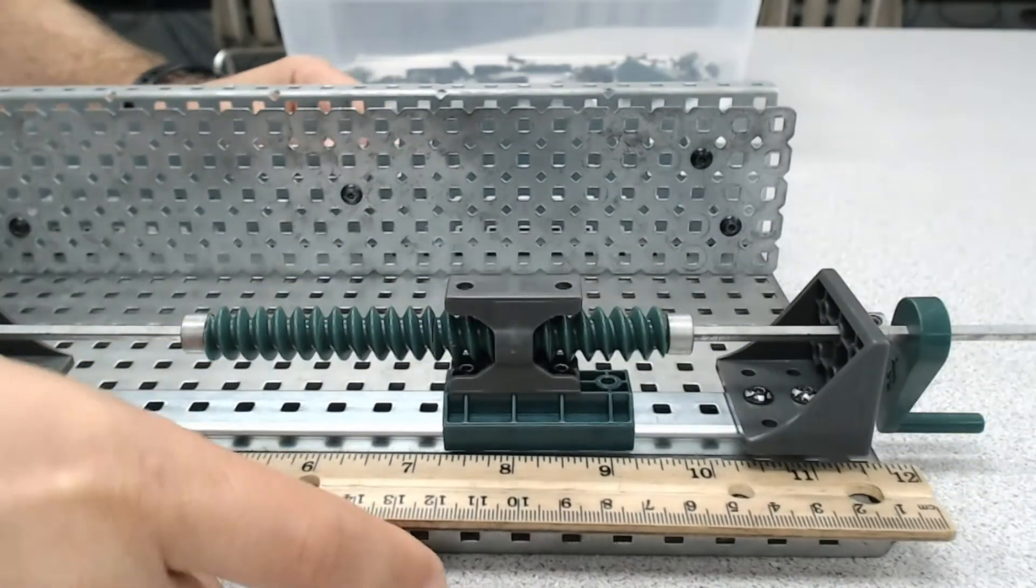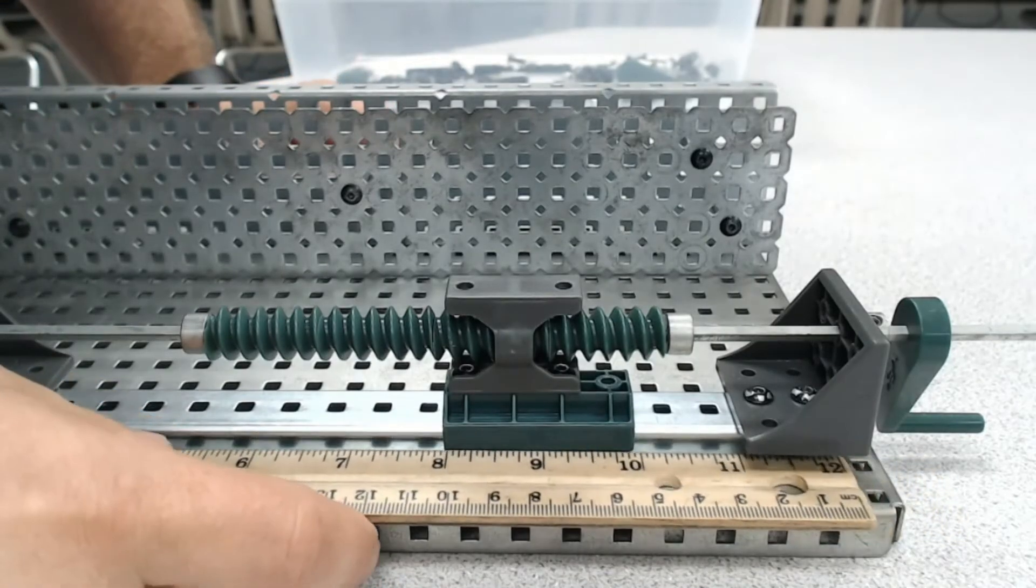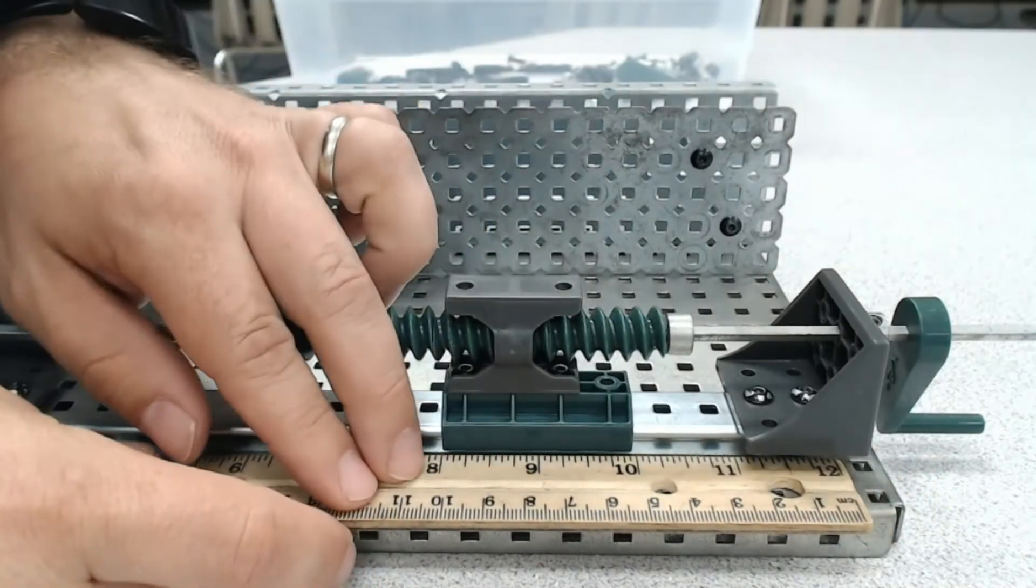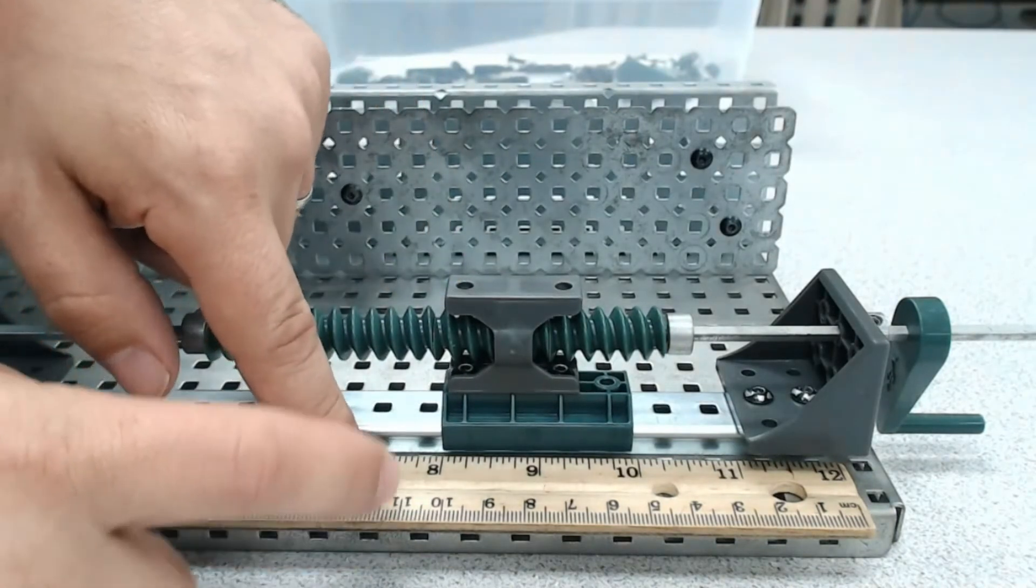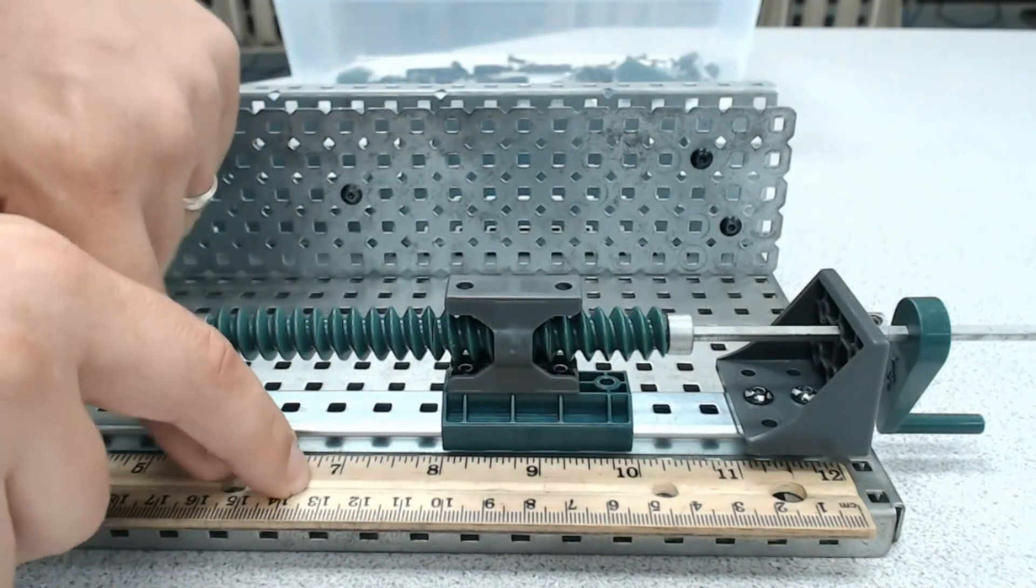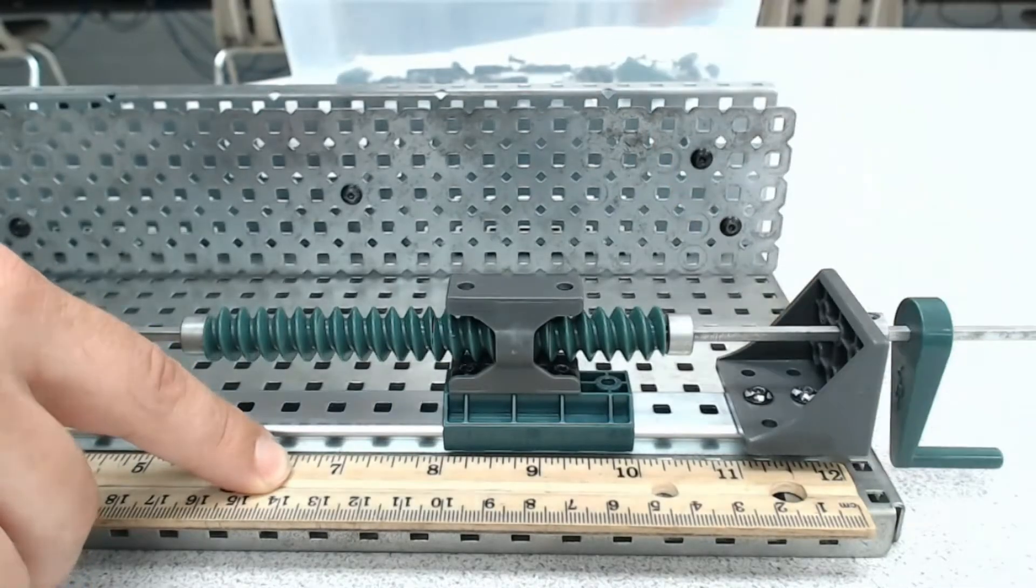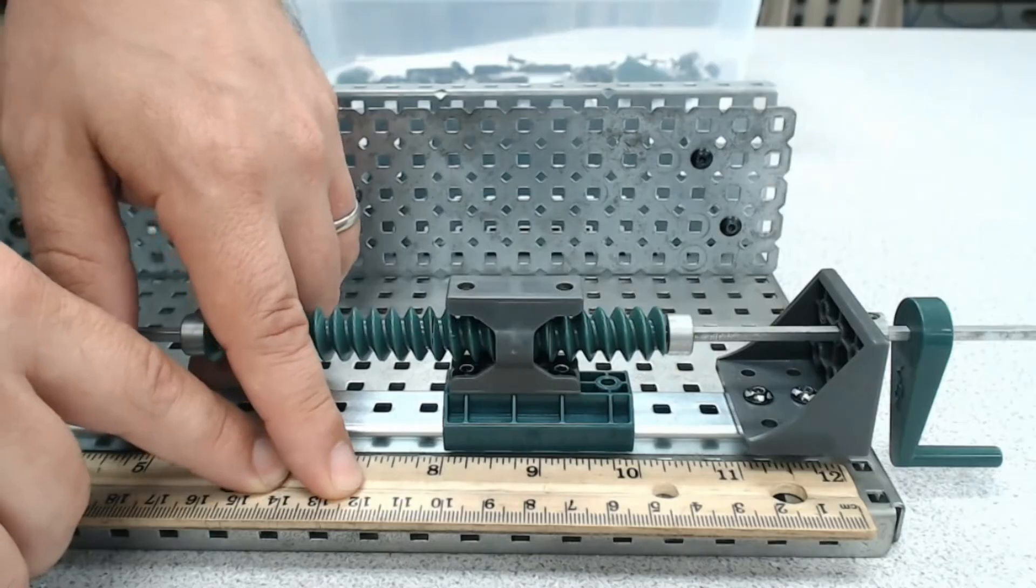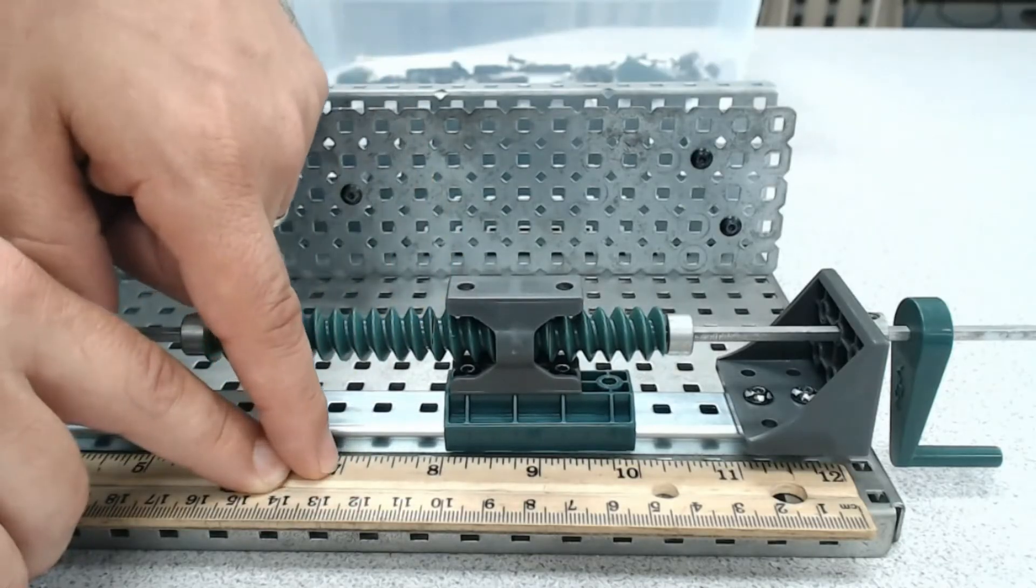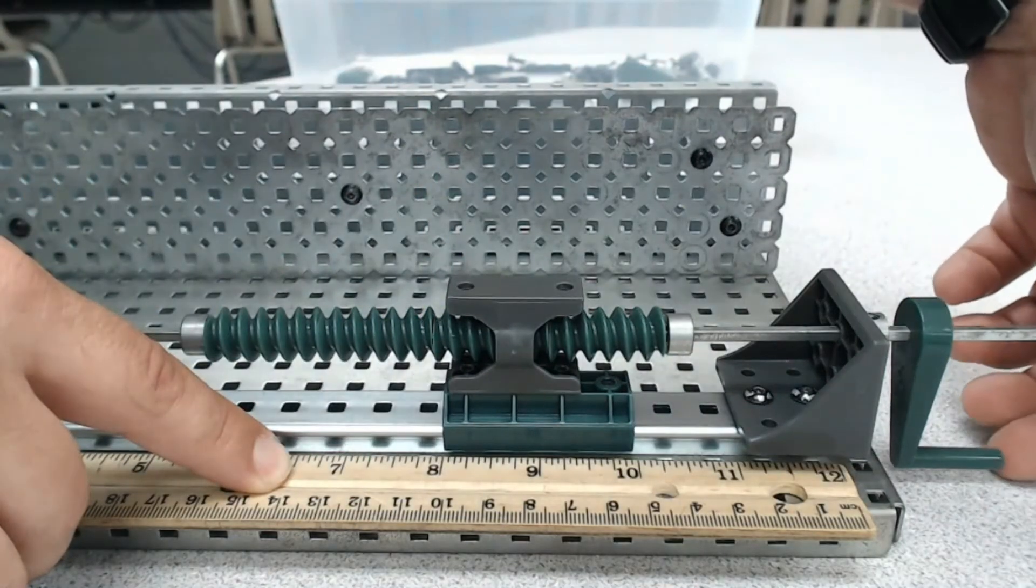And I'm going to line the ruler up here so that the front of the whole output assembly is lined up on eight. And now what I'm going to do is, let me get the handle just where I want it. We want to see how many revolutions does it take to get this whole assembly lined up with seven. So I'm going to go ahead and turn and you count.